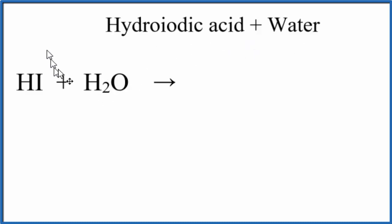The first thing we need to realize is that HI, hydroiodic acid, has H in front that tells us that this is likely an acid.